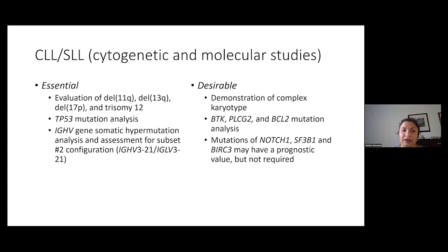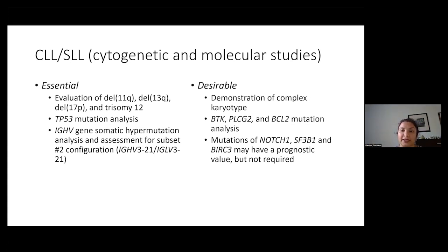In terms of cytogenetic and molecular studies, the essential cytogenetic markers are for the evaluation of 11q, 13q, deletion 17p, and trisomy 12. TP53 mutation analysis is also considered essential, as well as IGHV somatic hypermutation analysis and assessment for IGHV subsets. In terms of desirable cytogenetic and molecular studies, desirable would be the demonstration of a complex karyotype, as well as mutation analysis for genes often mutated after therapy, as well as prognostic markers such as NOTCH1, SF3B1, and BIRC3. Although these are seen in CLL and may have prognostic value, they're not required.